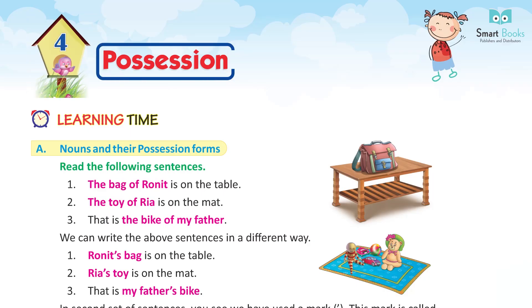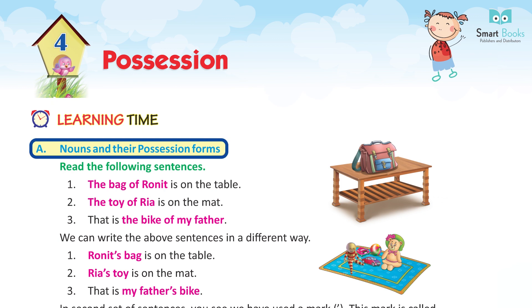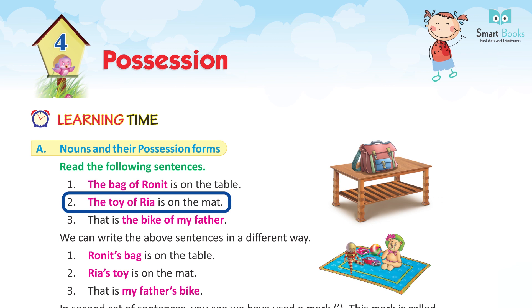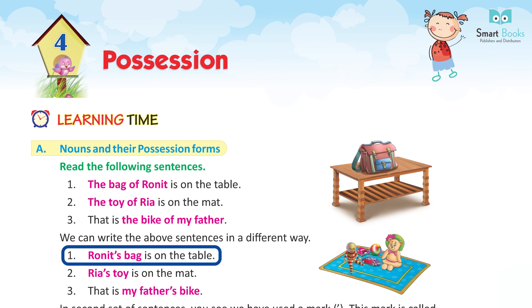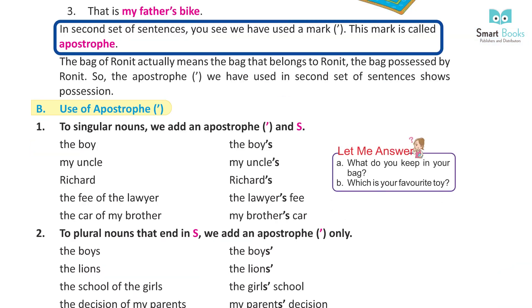Chapter 4: Possessions. Learning time — nouns in their possessive forms. Read the following sentences: 1. The bag of Ronit is on the table. 2. The toy of Rhea is on the mat. 3. That is the bike of my father. We can write the above sentences in a different way: 1. Ronit's bag is on the table. 2. Rhea's toy is on the mat. 3. That is my father's bike.